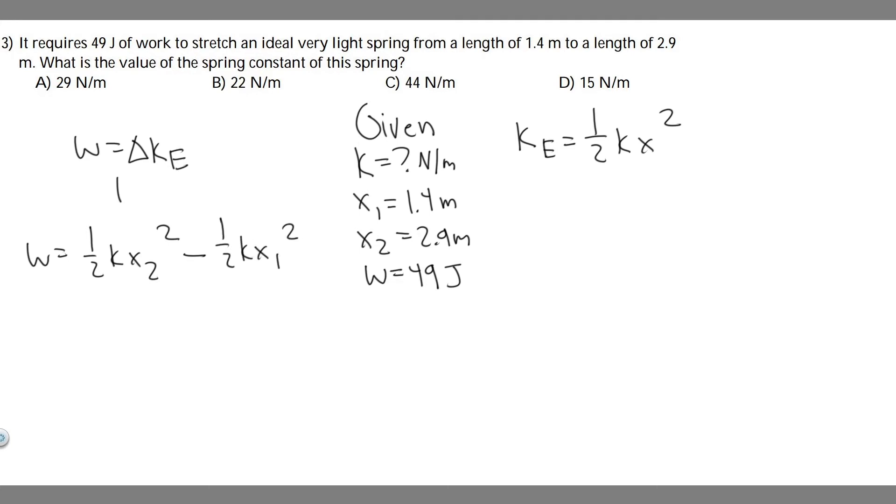So we know the work, which is 49, we know x2 and we know x1, meaning k is going to be the only thing that's left. So we can just go ahead and solve for it.